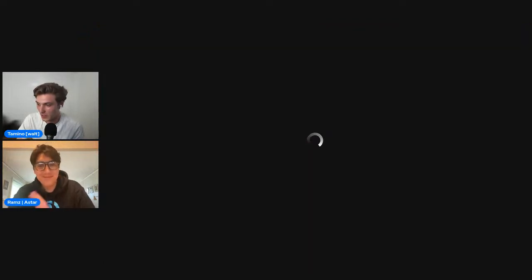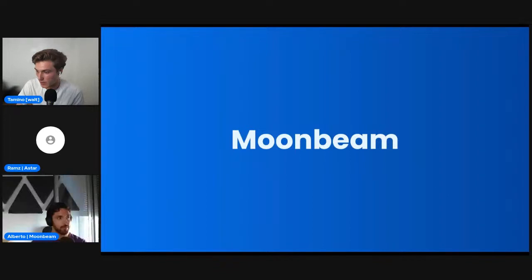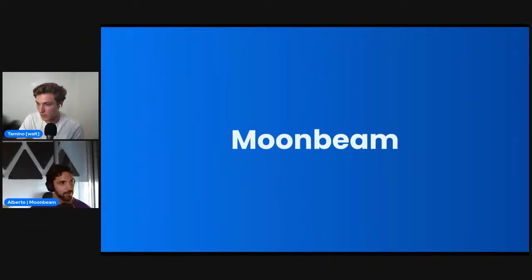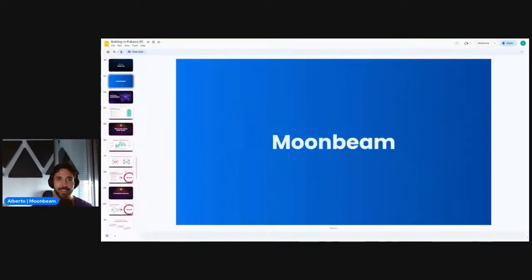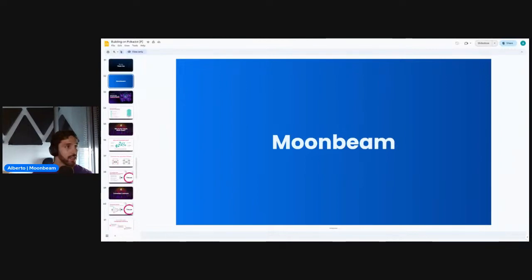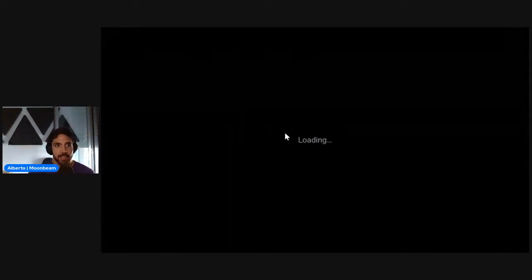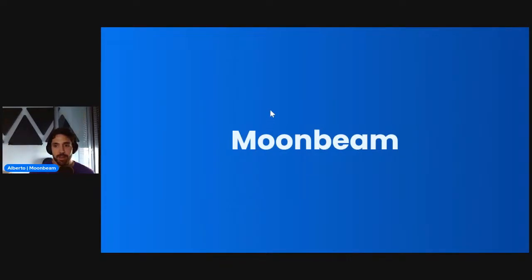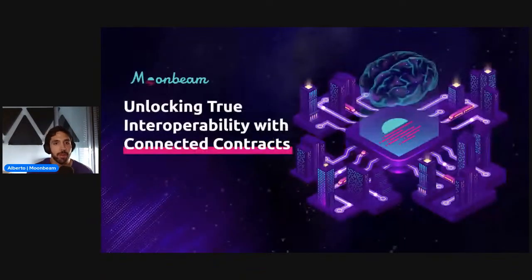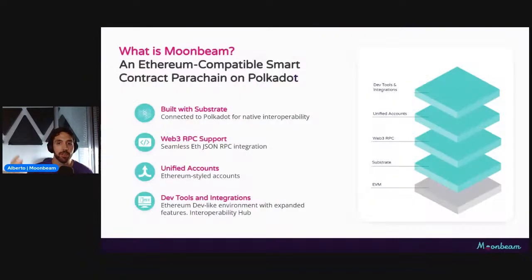Next up is Moonbeam, joined by Alberto, who will give an introduction to the Moonbeam ecosystem. Moonbeam is an Ethereum-compatible smart contract parachain on Polkadot. Ethereum compatibility starts with an EVM — the Ethereum Virtual Machine — which processes smart contracts, transactions, and executes the instructions given by them. As a core layer of Moonbeam, we have an EVM but we've added layers of features that enable Moonbeam to be just a lot more than just a typical Ethereum-compatible blockchain, both inside and outside Polkadot.